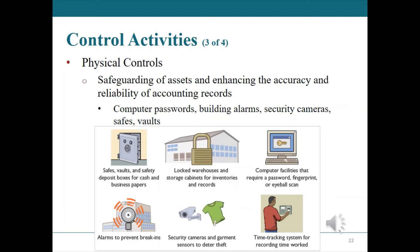Physical controls can be used to safeguard assets and enhance the accuracy and reliability of accounting records. In addition to physical controls, companies should ensure that assets are adequately insured — another form of safeguarding them from risk related to theft or damage from fire or floods.